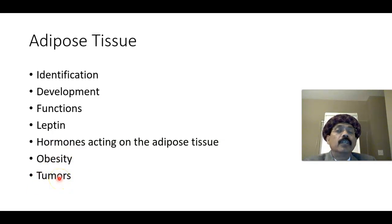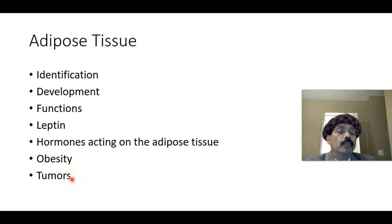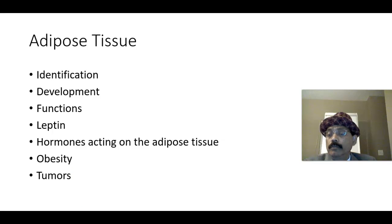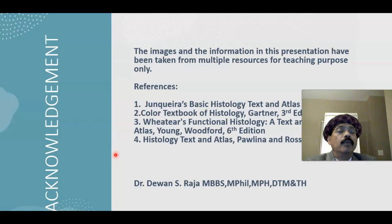Regarding tumors: from white adipose tissue there may be a benign tumor called lipoma, or malignantly a liposarcoma. In brown adipose tissue, a tumor may form called a hibernoma. If you have any questions, please feel free to ask, share the information with your friends, and please subscribe to the channel.